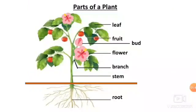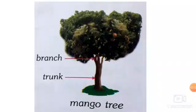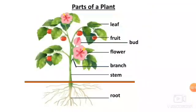And right from the root begins the stem, which usually grows above the ground. You have already learnt in the previous lesson that trees have a thick and strong stem called a trunk. From the stem grow the branches, which is the third part of the plant, as you can clearly see in the picture. And these branches bear leaves, buds, flowers, and fruits.